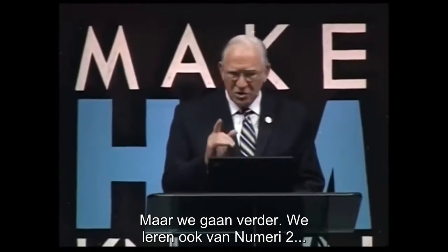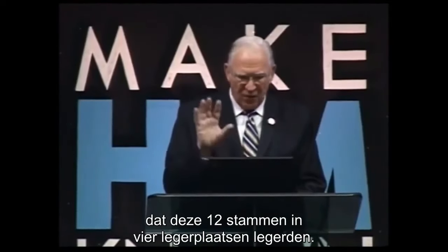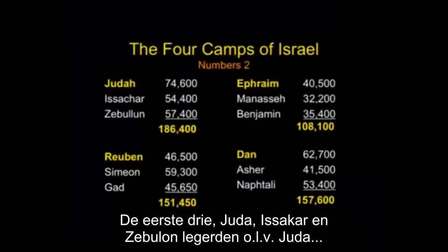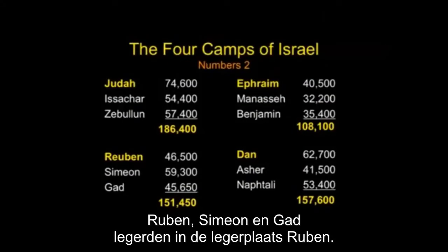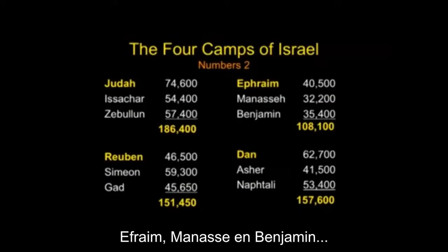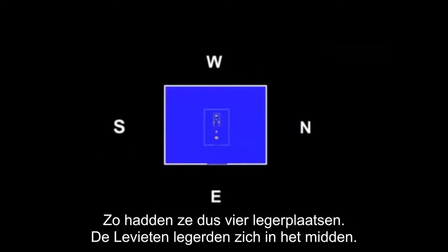We also learn from Numbers 2 that these twelve tribes camped in four camps. The first three — Judah, Issachar, and Zebulun — camped under the ensign of Judah as the camp of Judah. Reuben, Simeon, and Gad camped under the camp of Reuben. Ephraim, Manasseh, and Benjamin under the ensign of Ephraim. And Dan, Asher, and Naphtali under Dan. So they have four camps.